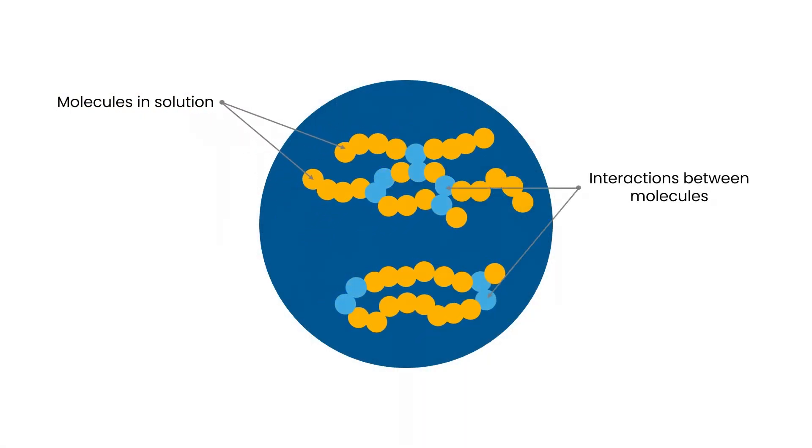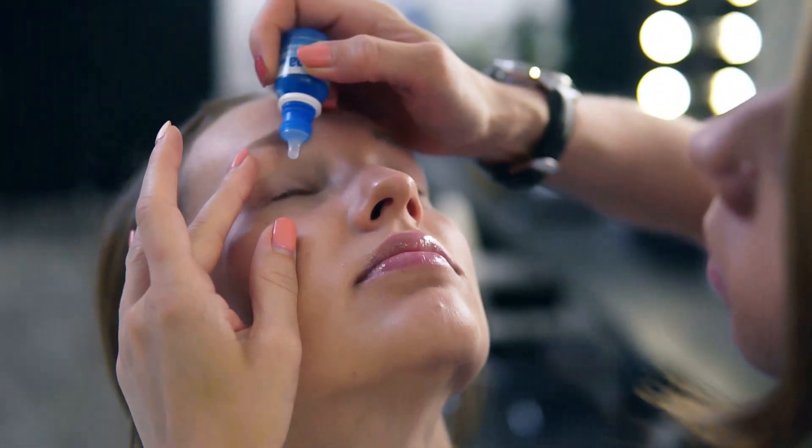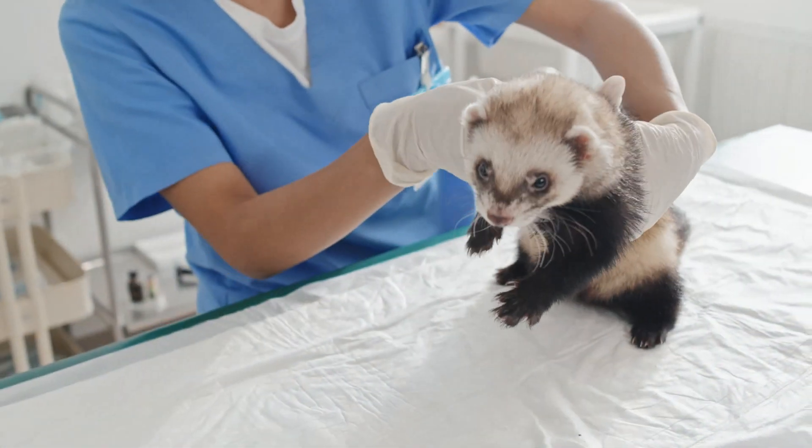The gelling agent we have is hydroxy ethyl cellulose. This is commonly found in things like eye drops, bathroom cleaners, and it's even found in ferrous shampoo.